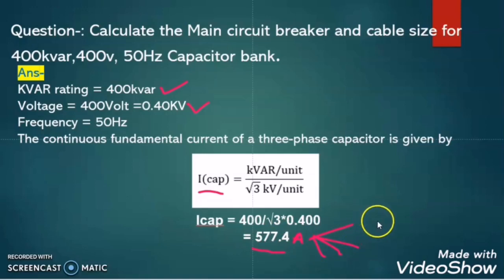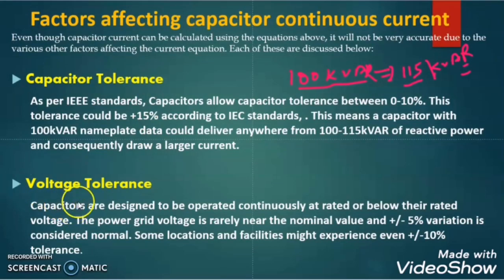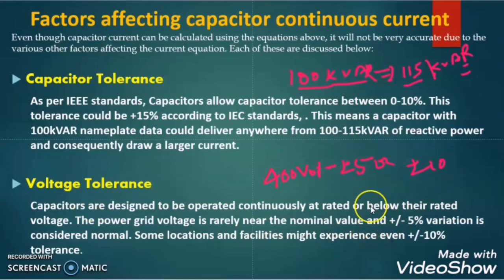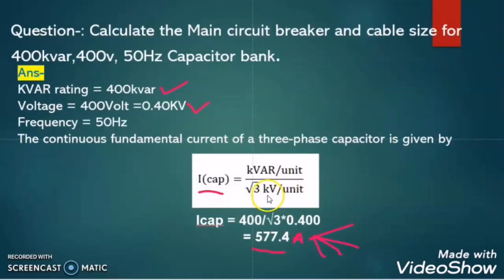Now the voltage tolerance: from the power utility sector, we get the power supply with a voltage of 400V with ±5% or ±10% tolerance. If the voltage changes, then the current of the capacitor will change. Since voltage appears in the formula, if the voltage changes from 400V to 405V or 410V, then the capacitor current value will also change.